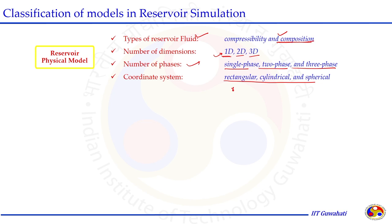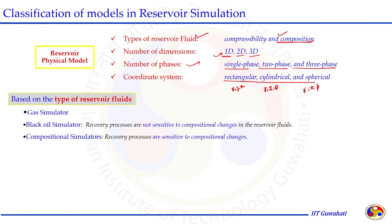The coordinate system can be rectangular (x, y, z), cylindrical (r, z, θ), or spherical (r, z, θ, φ). The choice depends on the geometry defined. Reservoir simulation models are also classified by type of reservoir fluid. A gas simulator is good for simulating gas processes. A black oil simulator is good for primary and secondary recovery where the process is not sensitive to compositional changes — it only considers physical properties of fluids. A compositional simulator is sensitive to compositional changes in the fluid.